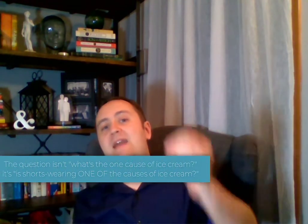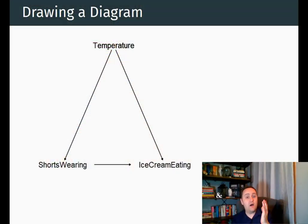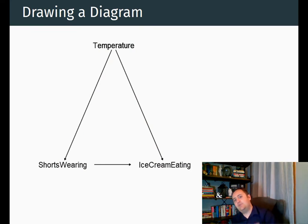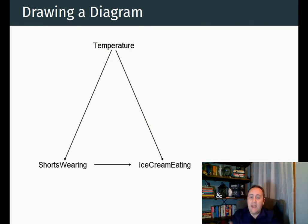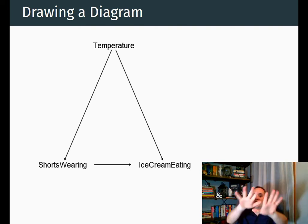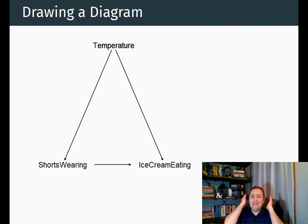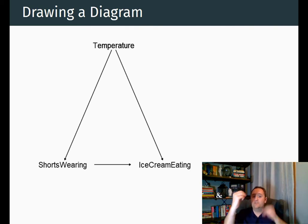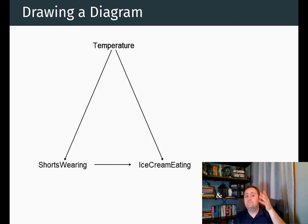So I'm going to represent that on a causal diagram. I'll put on the diagram: shorts-wearing, ice cream eating, and temperature. Shorts-wearing might cause ice cream eating — that's the arrow I'm interested in. But temperature certainly causes both of them. I just take the relevant variables, say which ones cause each other, draw arrows from one to the other, and that's the causal diagram.